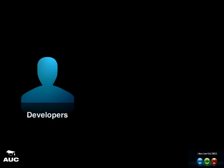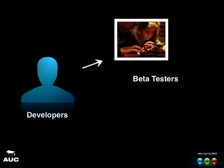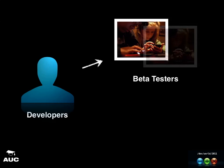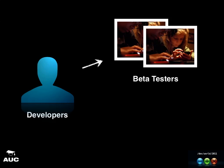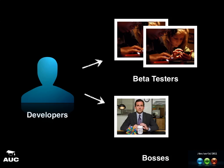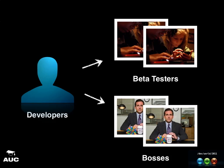As the developers, we are in charge of everything. We need to manage our beta testers, and sometimes we'll have different groups — for example, people with iPhones or people with iPads. And we also need to please our boss, and sometimes multiple bosses or a boss's boss. So we really need a good system to manage all of this.